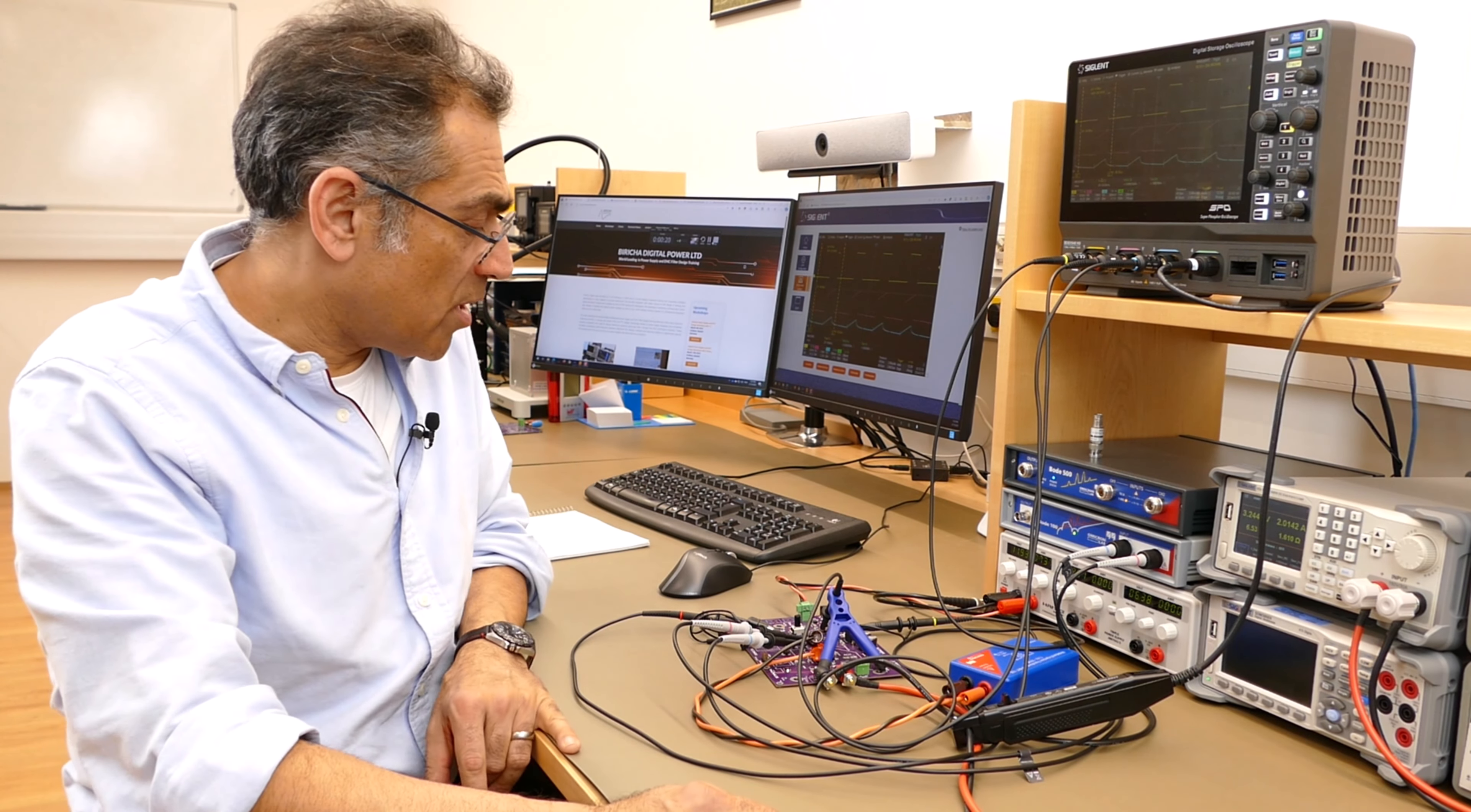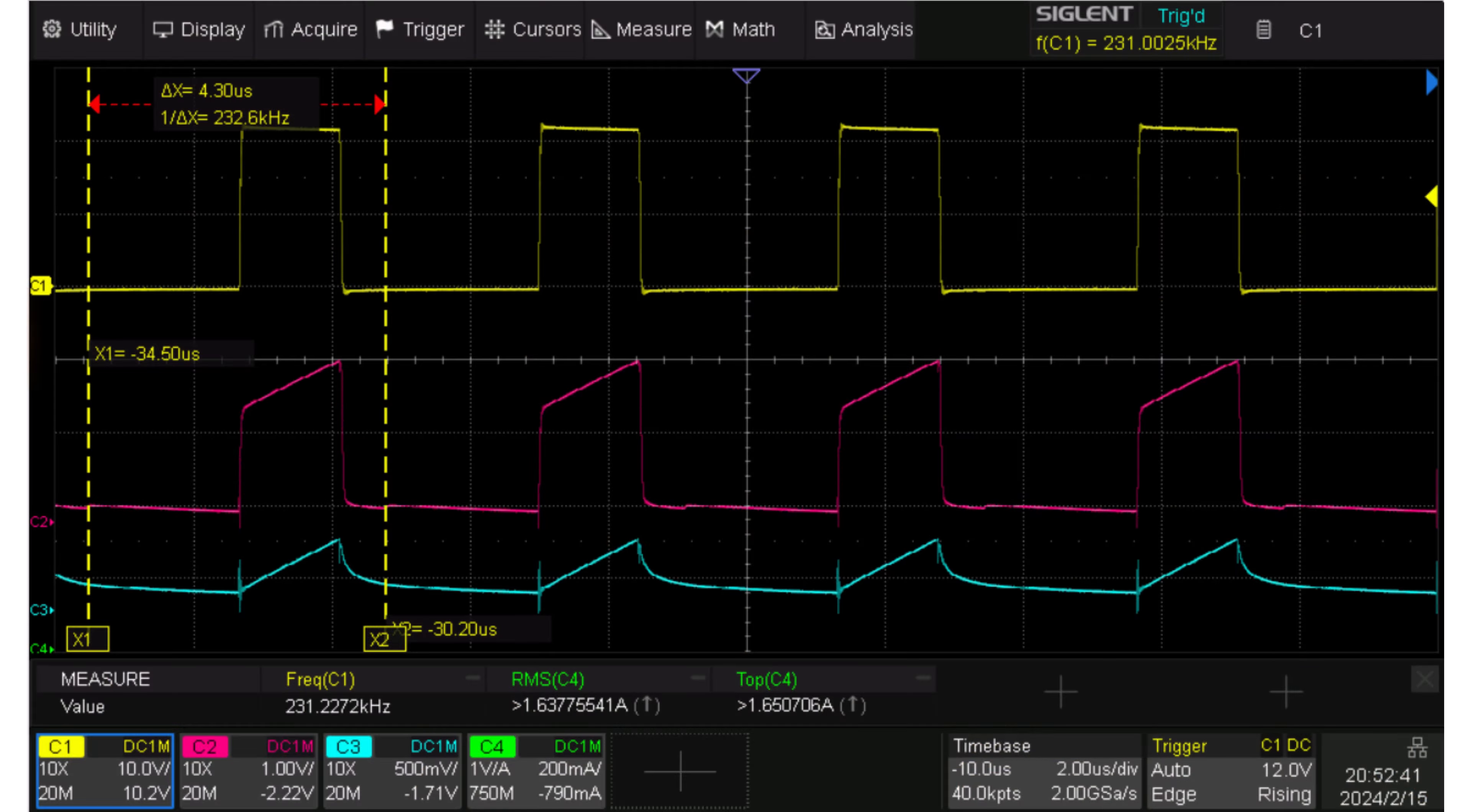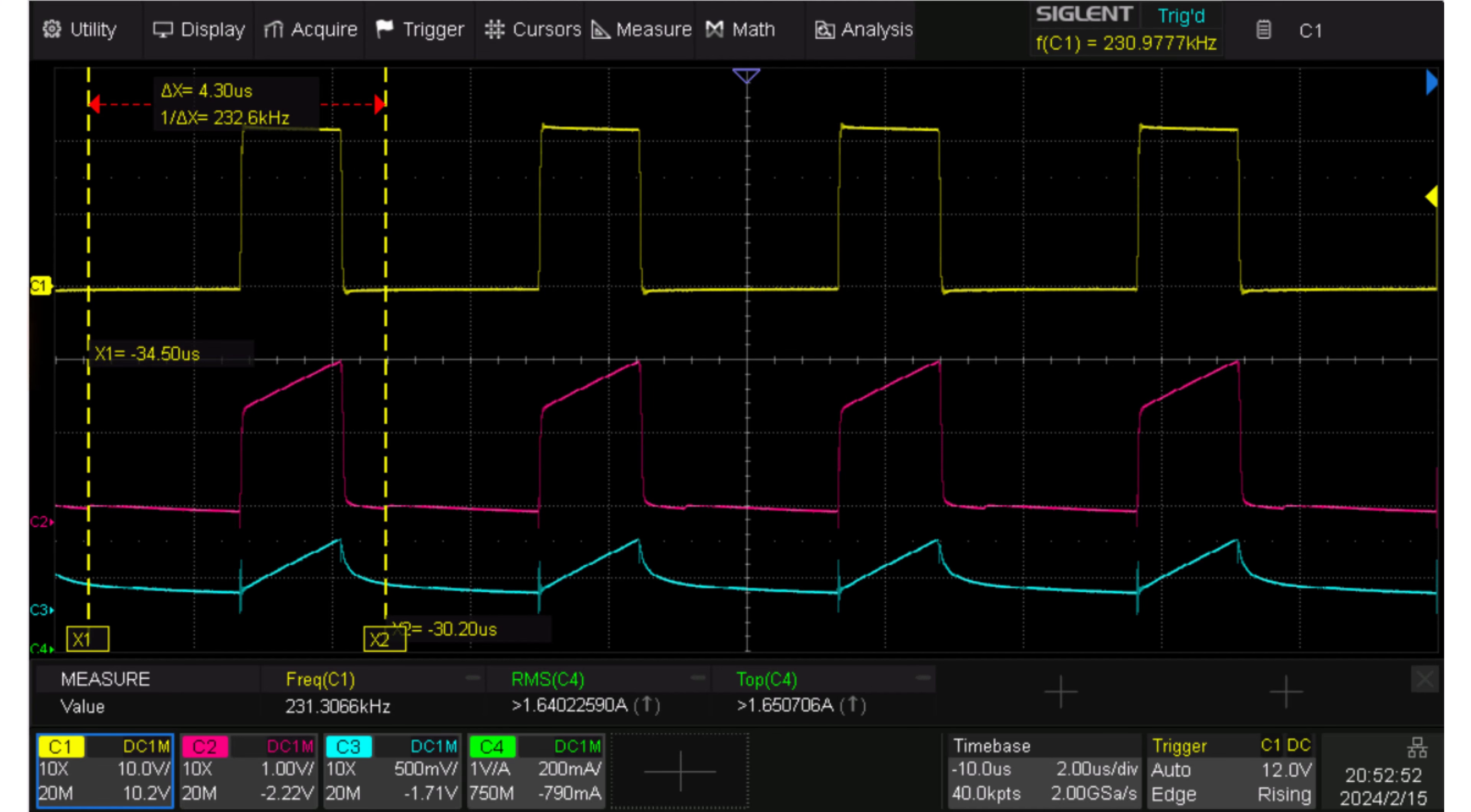Okay, so here we are in the lab. I've got here a buck converter, and what we're looking at on the oscilloscope is the PWM signal, that is the yellow trace. Then we have got the current sense signal, which is the switch current plus the added ramp, and that's the pink trace.